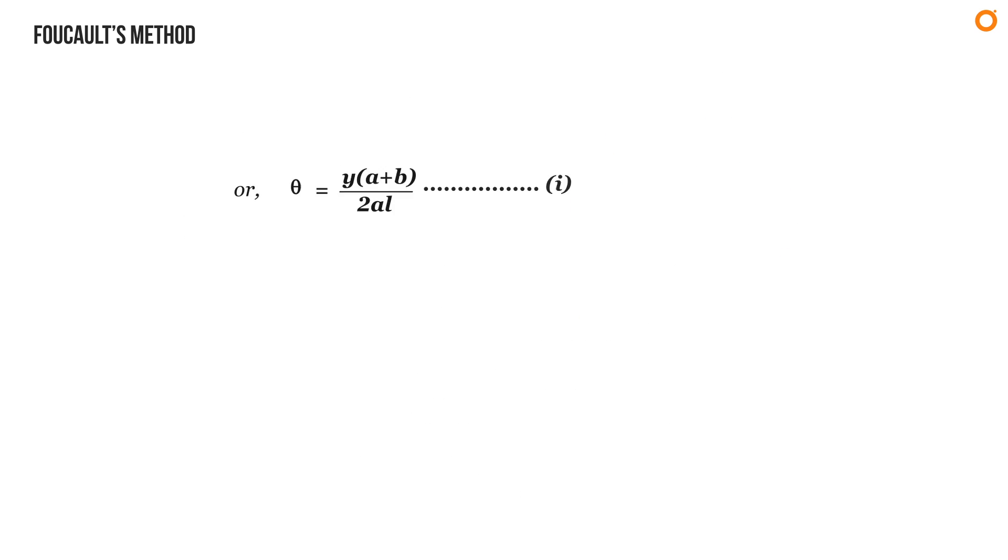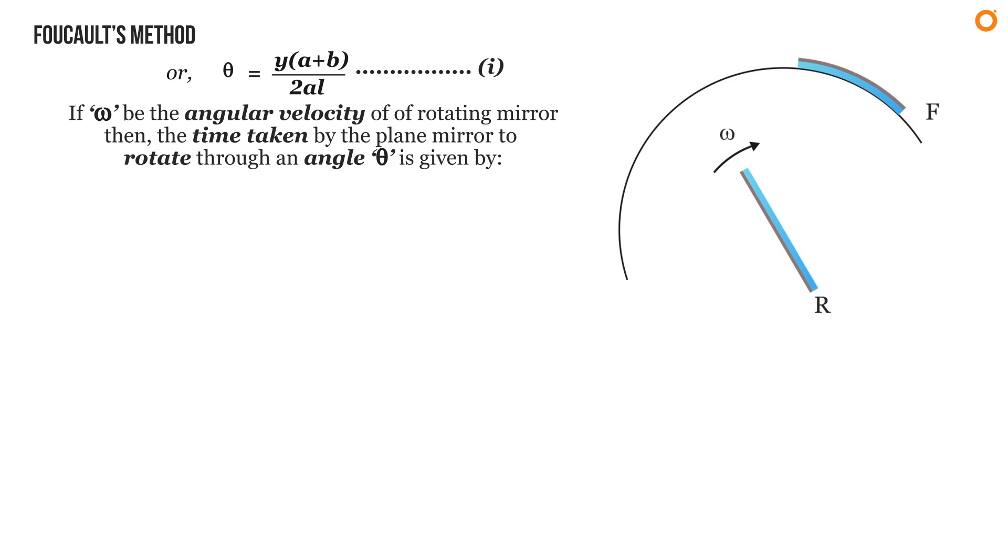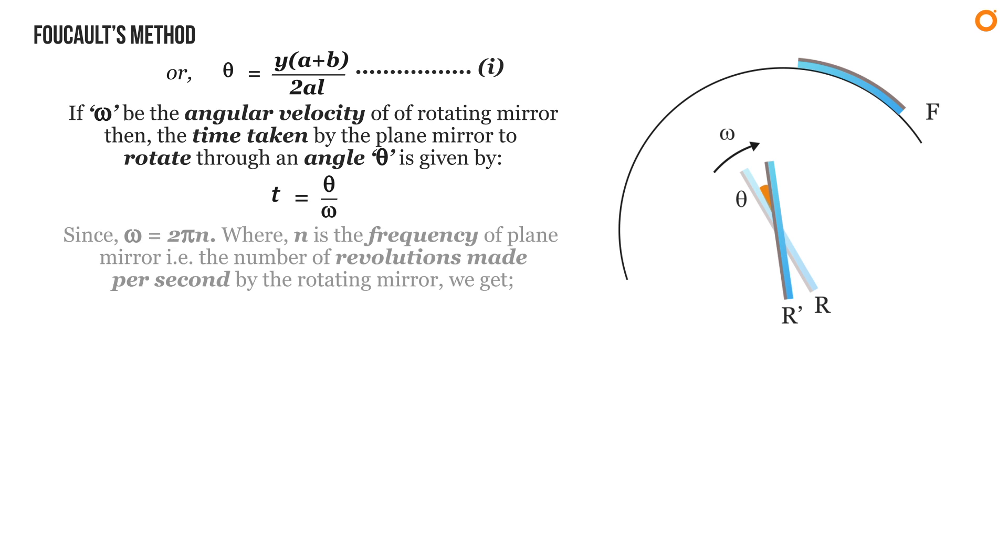Now if omega is the angular velocity of rotating mirror, then the time taken by the plane mirror to rotate through an angle theta is given by t equals theta divided by omega. Since omega equals 2 pi n, where n is the frequency of plane mirror, that is the number of revolutions made per second by the rotating mirror, we get time t equals theta divided by 2 pi n. Let it be equation two.